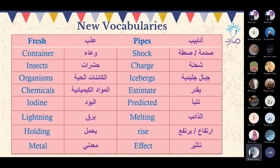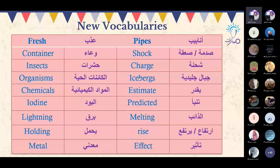Okay, thank you very much. Sajid — Ahsandi, bravo! Pipes — أنابيب. Shock. Charge. Icebergs. Estimate. Predicted. Melting. Rise. Effect. Safa Muhammad, yes Safa.